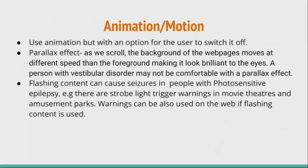Another important thing is animation and motion. We often use animations, videos, and GIFs in our content, and it's important to have an option to switch off the animation for someone who is not comfortable with it. There's also something called a parallax effect — when we scroll, the background of web pages moves at a different speed than the foreground. A person with a vestibular disorder like vertigo may not be comfortable with the parallax effect, so make sure there is an option to disable it. Sometimes this is up to web designers and developers, but make sure that option exists, because ultimately you are the owner of the content.